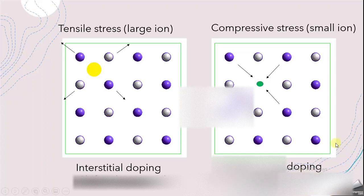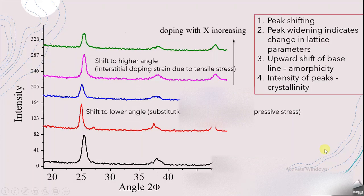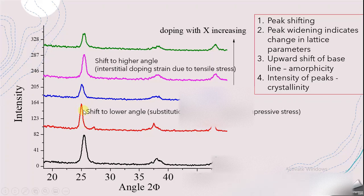Now let us see the XRD of a pure semiconductor oxide — titanium oxide — doped with a dopant ion labeled X. On the bottom you can see the black line, which is the XRD of pure titanium oxide. The red, blue, purple, and green lines above are the XRD spectra of titanium oxide doped with X, with the concentration of X increasing upward. The first thing to interpret is the shifting of the peak — the red line shows a peak shifted towards a lower angle, towards the left side.